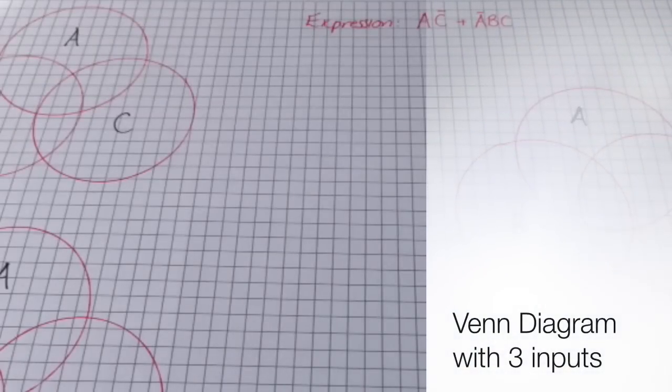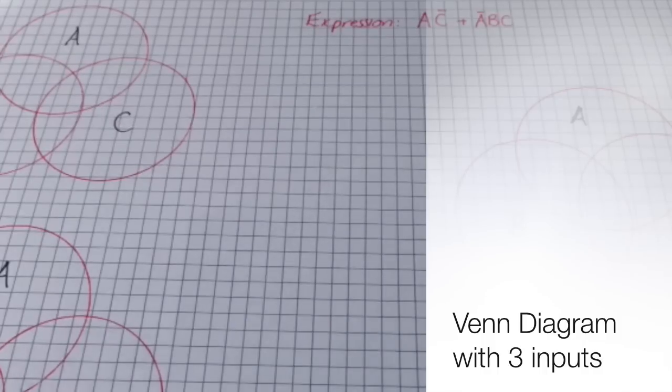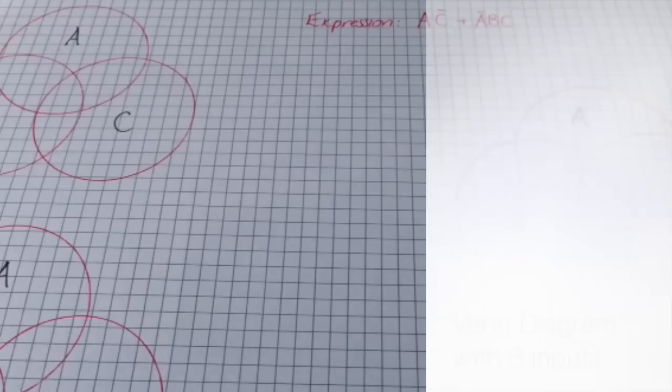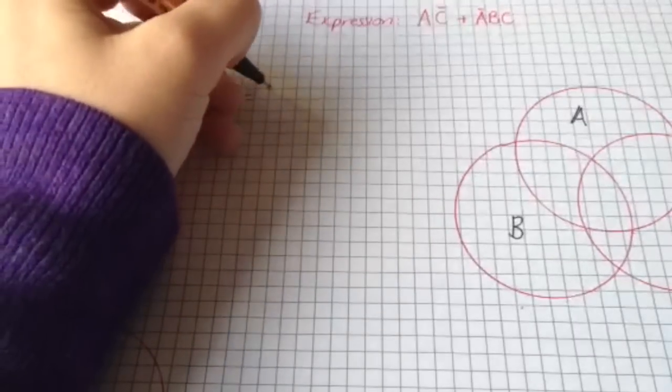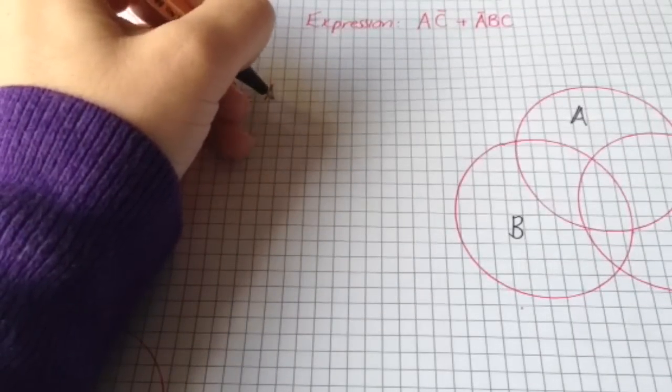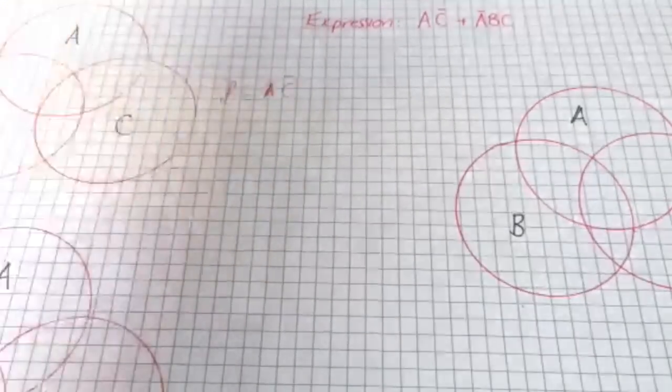Here we're looking at the expression A NOT C or NOT A B and C. So what we do is break this down into two Venn diagrams. Firstly, for the first step, which is F equals A NOT C.